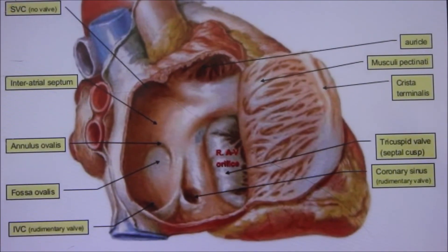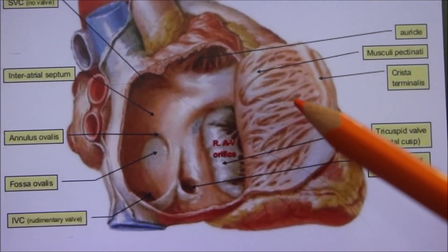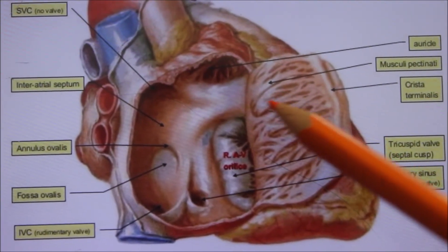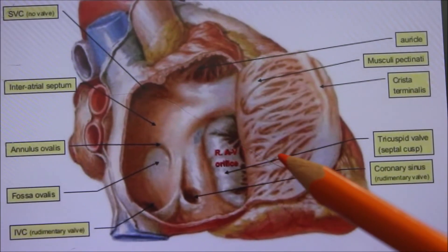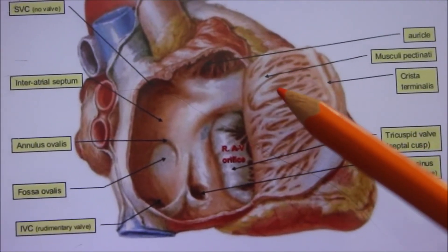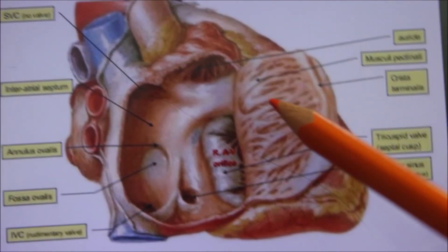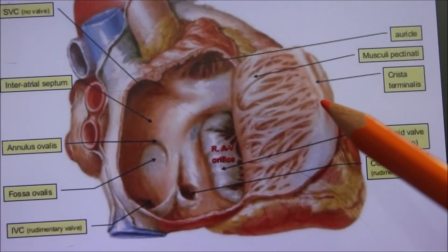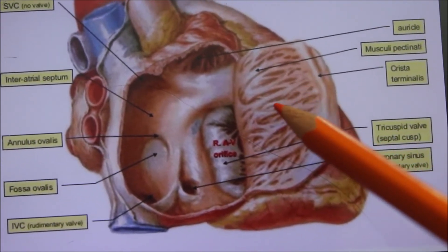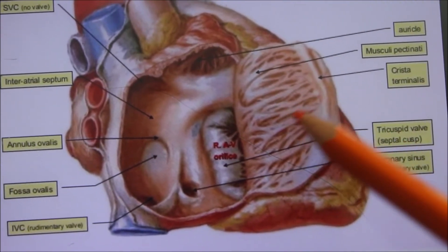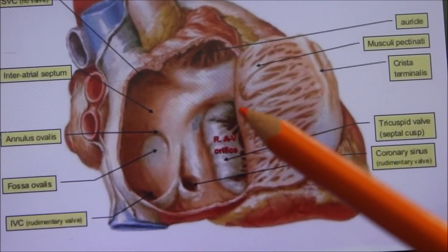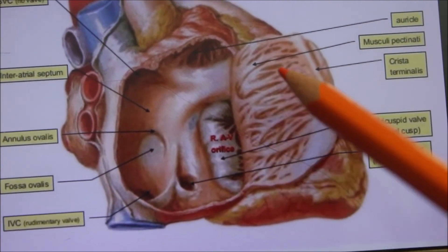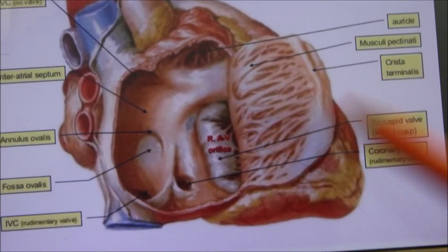Now looking at the rough anterior part or the pectinate part, it presents a series of transverse muscular ridges called the musculi pectinati. They arise from the crista terminalis and run forwards and downwards towards the atrioventricular orifice, giving the appearance of the teeth of a comb.